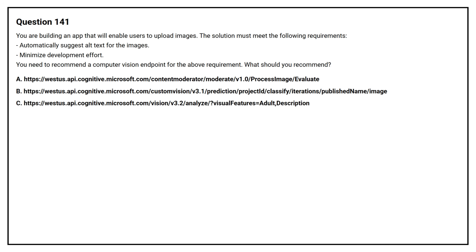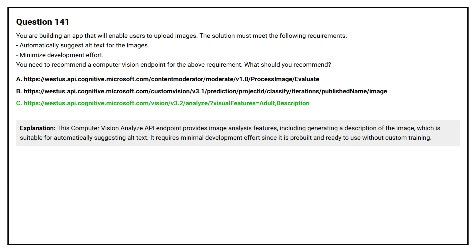Option A, option B, option C. The correct answer is option C. This computer vision analyze API endpoint provides image analysis features including generating a description of the image, which is suitable for automatically suggesting alt text. It requires minimal development effort since it is pre-built and ready to use without custom training.